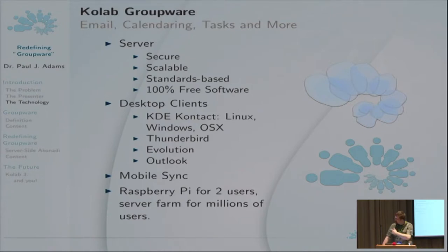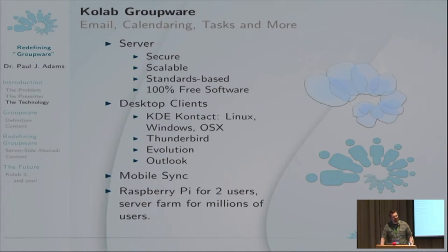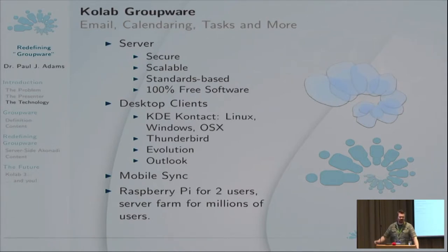It's very scalable. You can run a CoLab server on a Raspberry Pi device for a couple of users — the caveat being let's hope they're not concurrent — including the web client, the whole lot. Or you can put it in a server farm and run it for millions of users. I know of examples at both ends of the scale. I have two Raspberry Pis on my desk at home, and I know of very large millions-of-users deployments.